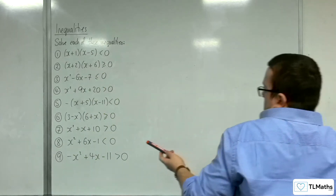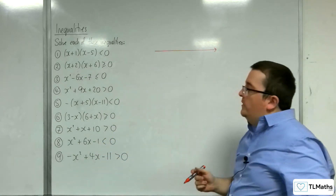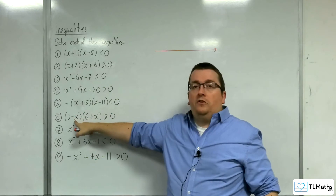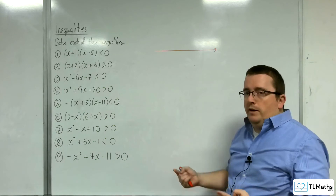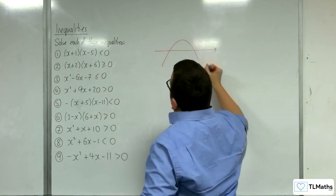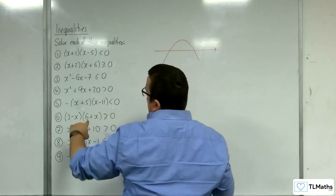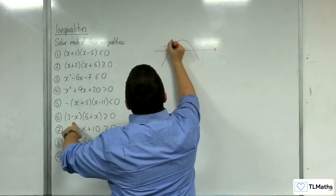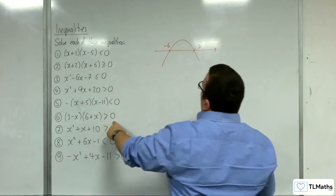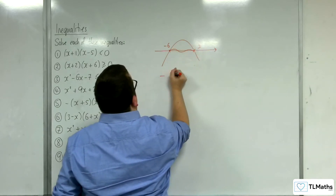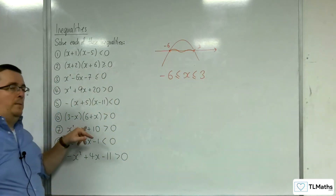Number six: be careful — it's in factorised form but notice the minus x inside the bracket. If you multiply it through you get a minus x², so the graph is the inverted parabola shape. It crosses the x-axis at −6 and +3. Where is the graph above or equal to the x-axis? That's between them, so −6 ≤ x ≤ 3.